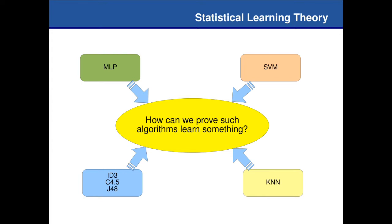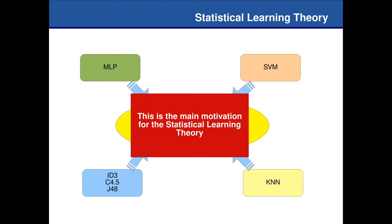We are concerned about the algorithms themselves. Each of those algorithms is going to, under a certain configuration, properly define a bias — a space of admissible functions. On top of that space of admissible functions, can we prove that the algorithm learns? What is learning in that case? This is the main motivation for statistical learning theory.